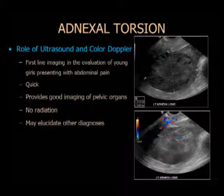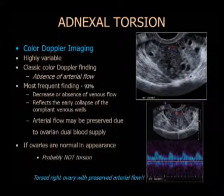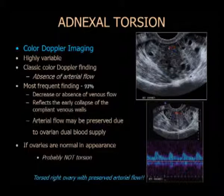¿Cuál es el rol del ultrasonido y del Doppler? Son las imágenes de primera línea en esta población, sin irradiación. Las imágenes Doppler son variables; clásicamente buscamos la ausencia del flujo arterial, pero en realidad la ausencia o disminución del flujo venoso es lo primero que busco, porque hay dos arterias que nutren al ovario. Acá un lindo caso de una niña: era un ovario grande con flujo arterial normal preservado — aun así se confirmó como torsión en la resección quirúrgica.